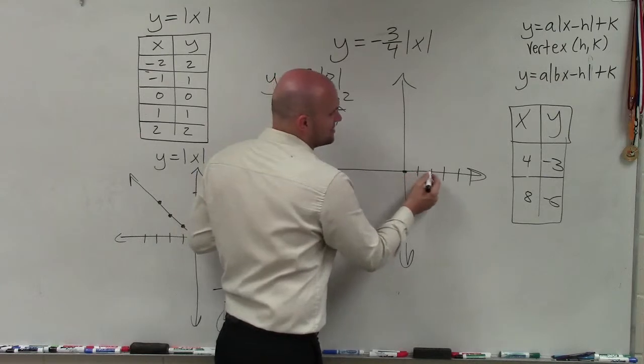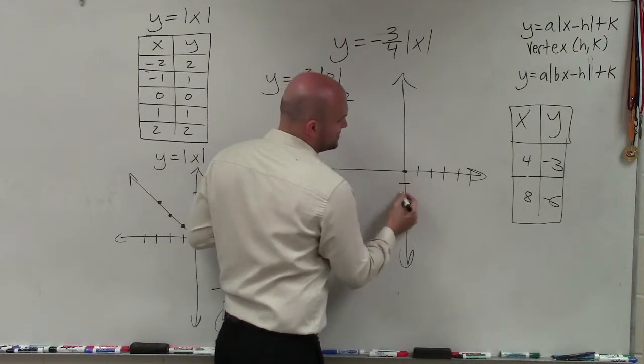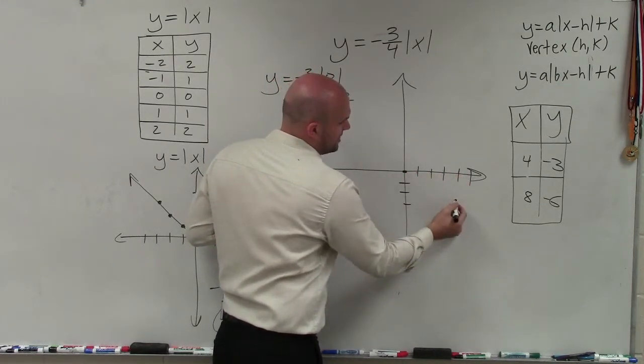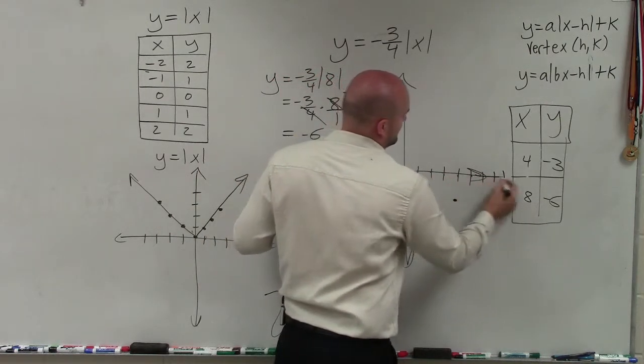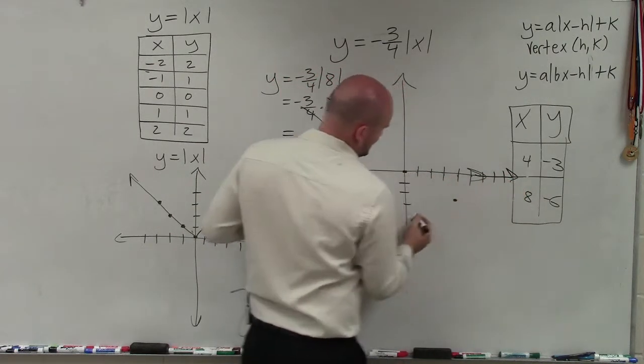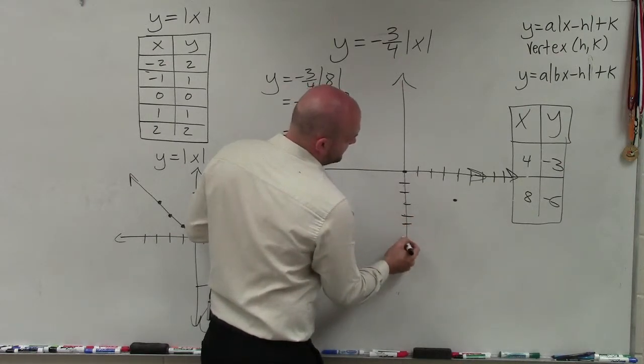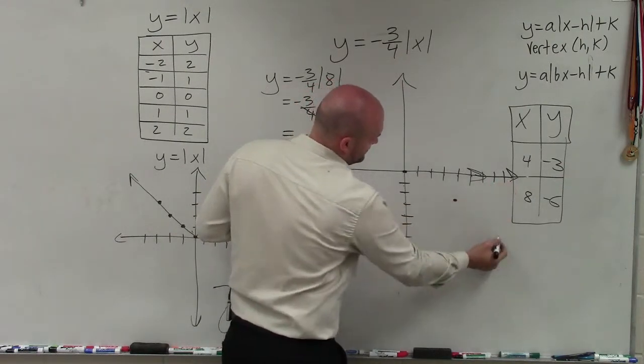So now let's go ahead and plot these points. Over 4, down 3. And then over 8, down 6.